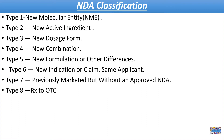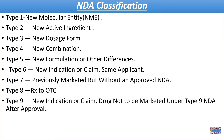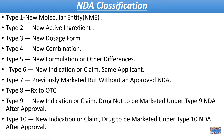Type 8: A Type 8 New Drug Application is for a drug product intended for over-the-counter use. Type 9: This type provides for a different dose, strength, dosage, or indication from a drug product that has been previously approved for prescription sale. Type 9: New Indication or claim — drug not to be marketed under the Type 9 NDA after approval. Type 10: New Indication or claim — drug to be marketed under the Type 10 NDA after approval.